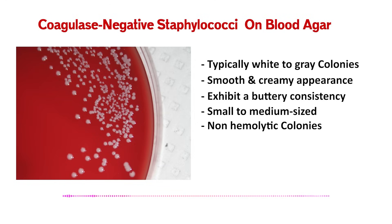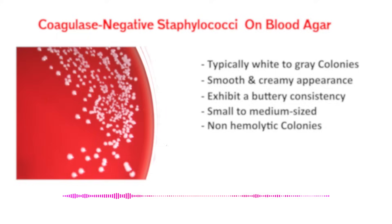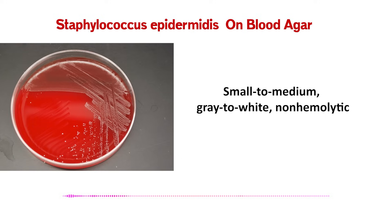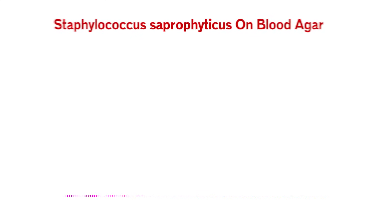That's where it gets interesting — where the real diagnostic clues are in the exceptions. The source, Mahon and Lehman, highlights some key variations, especially with specific species. S. epidermidis is the one we see most often, and it fits that classic description perfectly: small to medium colonies, gray-white, totally non-hemolytic. It's your baseline CoNS — the standard picture.